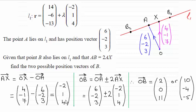And then I know that to get to this B here, B1, what I do is I go from the origin up to A and then I do twice AX. So therefore OB would be OA plus twice AX. That would get me to B1.